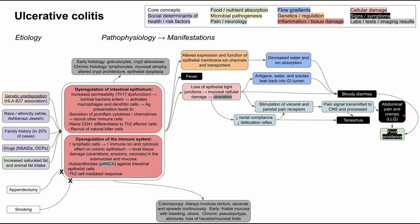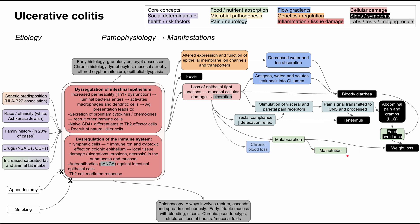Abdominal pain, cramping, and bloody diarrhea generally lead to food avoidance. Patients realize that eating triggers symptoms, so they present with anorexia. Additionally, having ulcers and cellular inflammation in the gut leads to malabsorption. Both malabsorption and anorexia contribute to weight loss, and the patient will be malnourished if nutrients are not being absorbed.